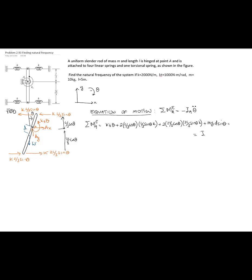Now let's calculate the mass moment of inertia and the location of the center of mass. The center of mass is at the midpoint of the bar, but at a distance d from point A. Since A is at one-third from one end, and the center of mass is at L/2, we subtract L/2 minus L/3 to get d = L/6.